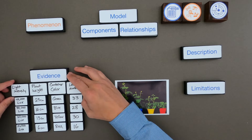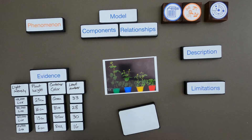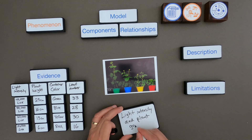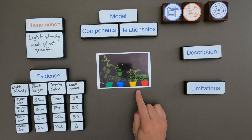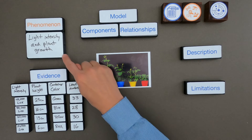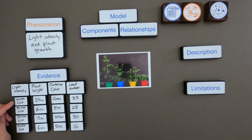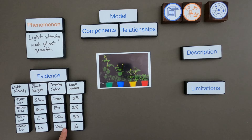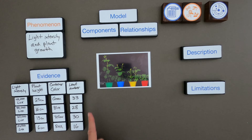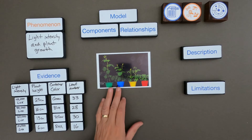I'm going to put the evidence over here to the side. The first thing I want to think about is what is the phenomena. The phenomena I wrote down is that they changed the light intensity and then looked at the amount of plant growth. As I look through the data, I can see the light intensity is decreasing from 40,000 lux down to 10,000. As that goes down, the plant height is also going down. I also see the plants are in different colors of containers, and there is some relationship with leaf number — the ones with more light have more leaves.